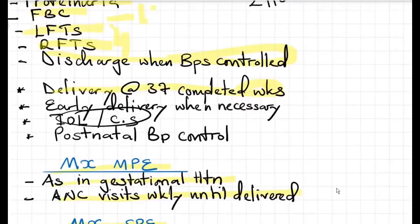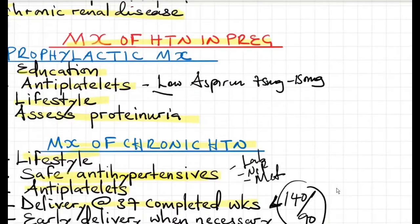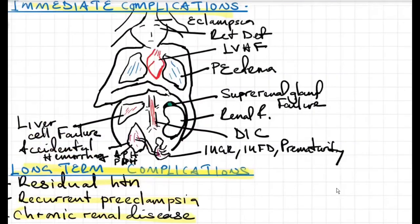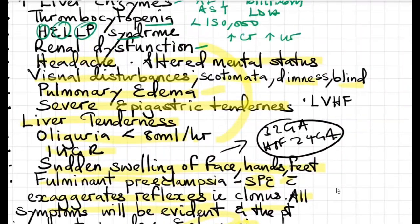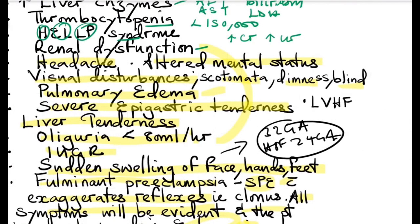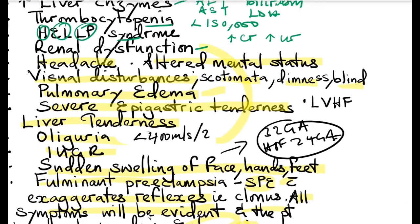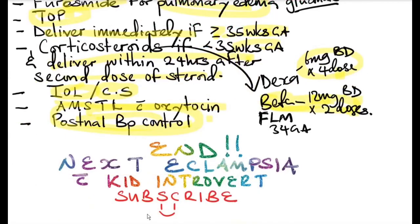One correction: oliguria in severe preeclampsia is not 80 mL per hour, but less than 400 mL in 24 hours. The next chapter is going to be on eclampsia. Don't forget to subscribe to this channel for more videos.